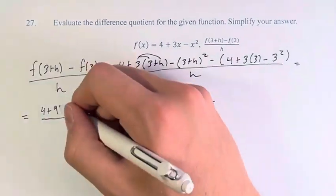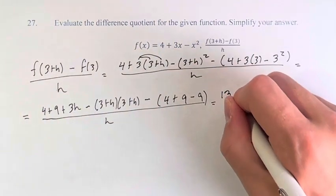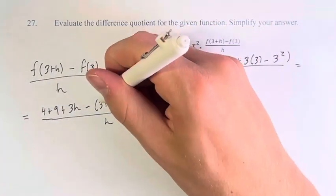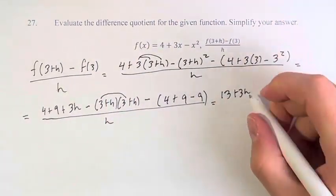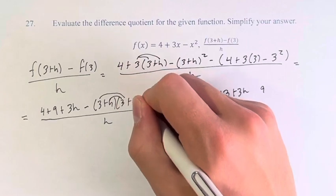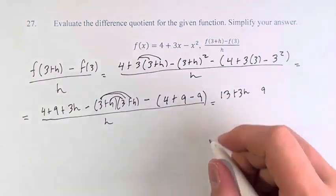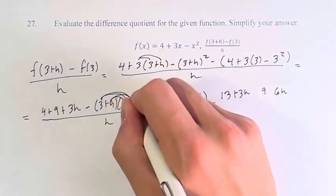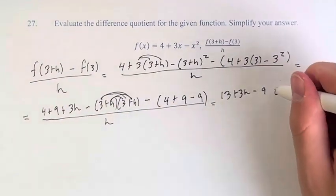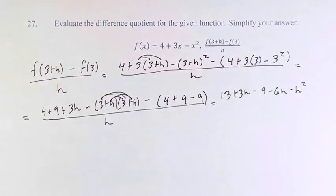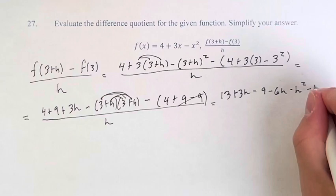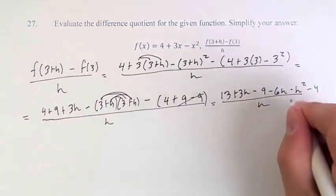This is equal to 13 + 3h. Okay, in this we have 9, 3h, 3h, 6h, and h². And because we are subtracting all of this, all of them become negative where they normally would have become positive. 9 - 9 is 0, so this is just minus 4, over h.